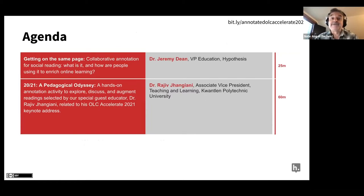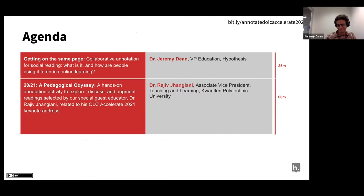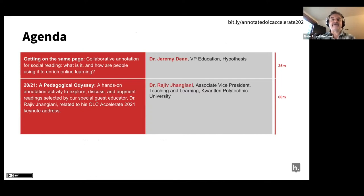Here's our agenda for today. It's pretty straightforward—we're going to do two main things. First, as I mentioned, my colleague Dr. Jeremy Dean is going to take a few minutes to get us all on the same page about what social annotation is and how we think about it. We realize that a bunch of you already know all about that, but there are also new folks who don't, so we'll just take a few minutes to kind of get everybody together in a common understanding.